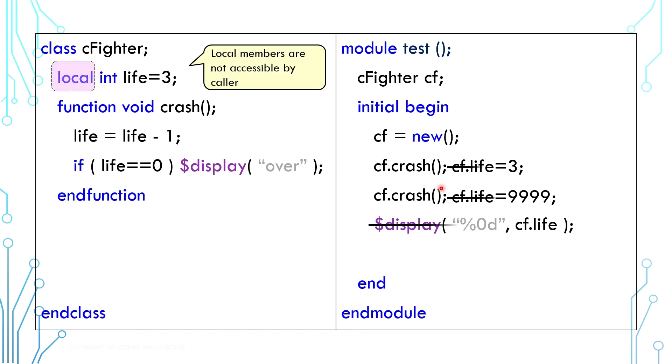With that, users can no longer access the member life. If we need to read the life value, we can create a function to get it, practically making the local member read-only.